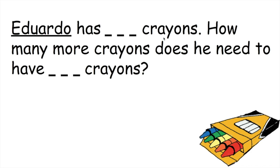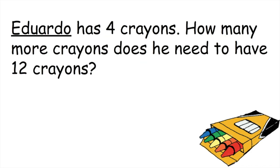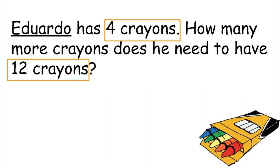Now I'm going to read our problem again with the numbers. Eduardo has four crayons. How many more crayons does he need to have 12 crayons? So now I've added in our numbers, but I need to know what the important numbers in this problem are and what they mean. I box the important numbers — I put a box around four crayons and I put a box around 12 crayons, because this tells us what numbers we are working with and what they mean.